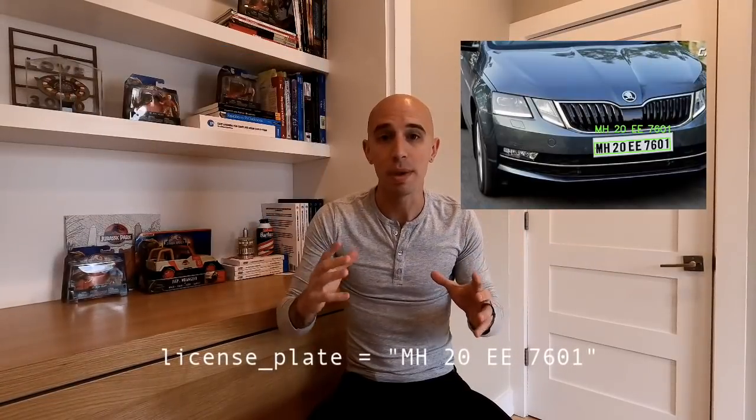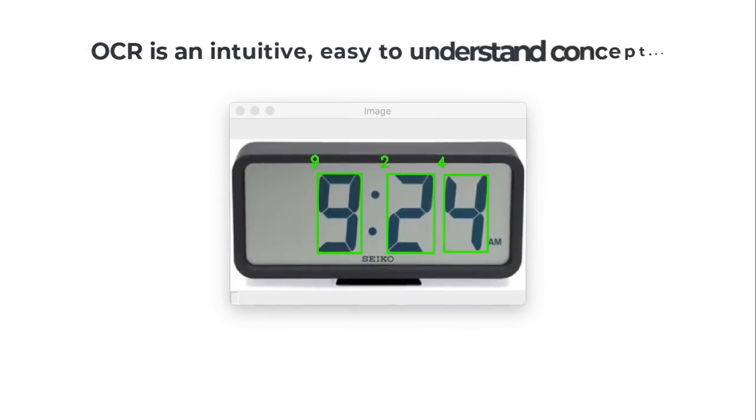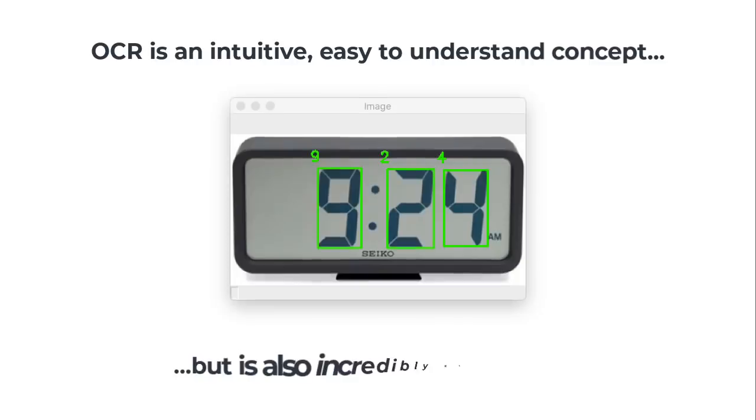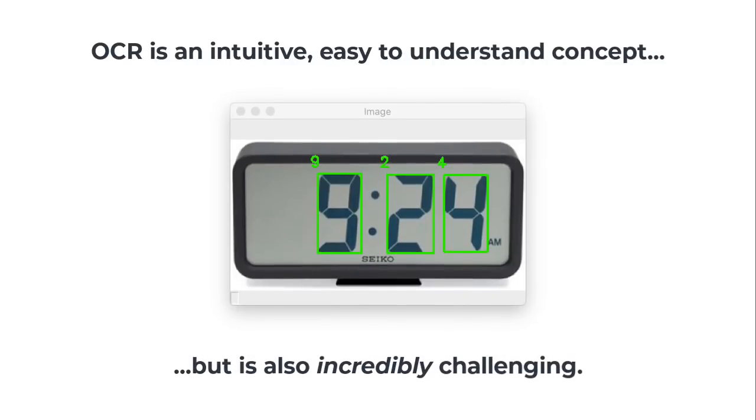OCR is a simple concept. You take an input image, and then you automatically recognize the text in the image, and then convert it into a machine-encoded variable that a piece of software or an API can take action on. But despite being such an intuitive concept, OCR is incredibly hard.